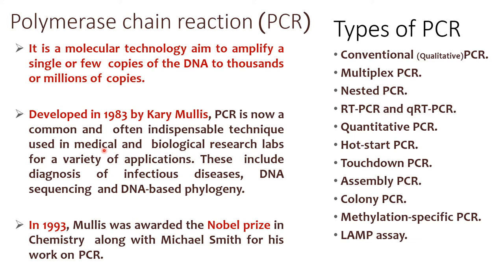These applications include diagnosis of infectious diseases, DNA sequencing, and DNA-based phylogeny. In 1993, Mullis was awarded the Nobel Prize in Chemistry along with Michael Smith for his work on PCR.